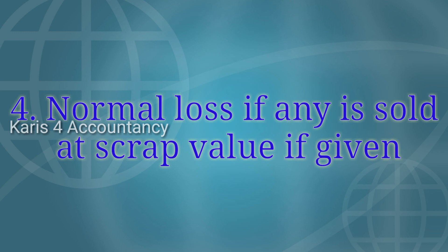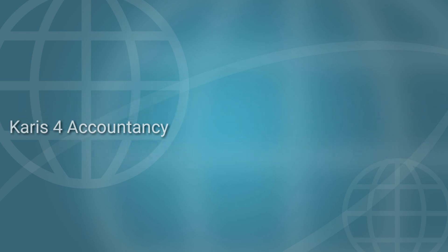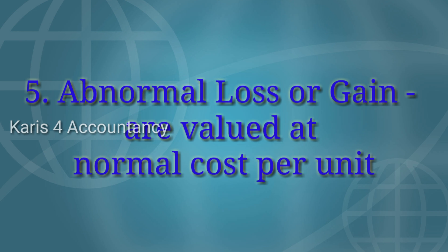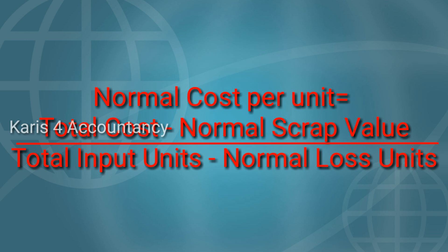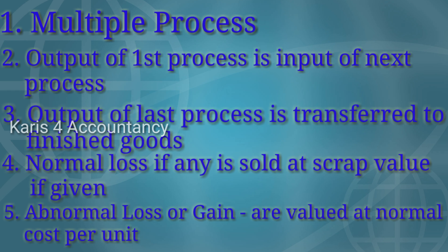Normal loss, if any, is sold at scrap value. In this case, output is valued at normal cost per unit. Normal cost per unit is calculated as: Total Cost minus Normal Scrap Value, all divided by Normal Input Units minus Normal Loss Units.